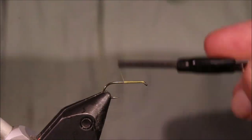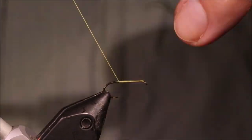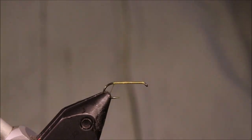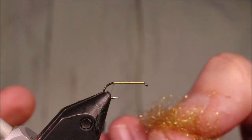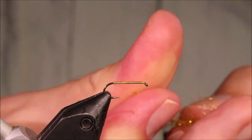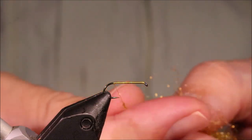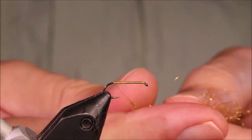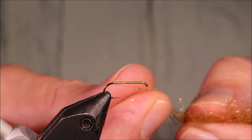So I've got my hook in my vise, it's a size 14 TMCO 100BL. I've run on some UTC 70 denier, which is like an 8-aught, in hopper yellow. That's a nice color for this that I'm going for. But adjust it to suit, you can use brown or tan or whatever.